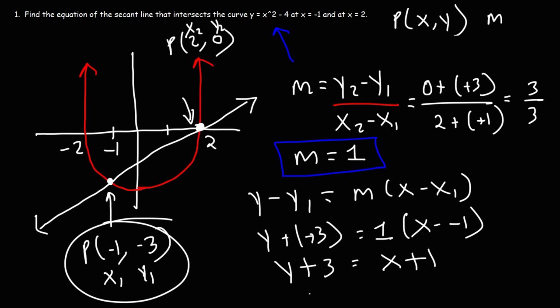Now the last thing that we could do at this point is subtract both sides by 3. So we're going to have y is equal to x. And then 1 minus 3 is negative 2. So we have y is equal to x minus 2.